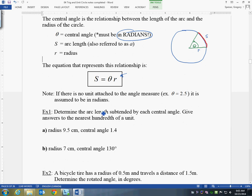Let's try the examples. It says here, determine the arc length subtended. So subtended is another word that means created by each central angle. Give the answers to the nearest hundredths.